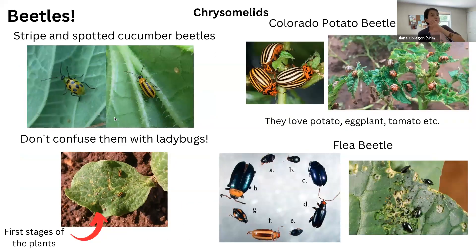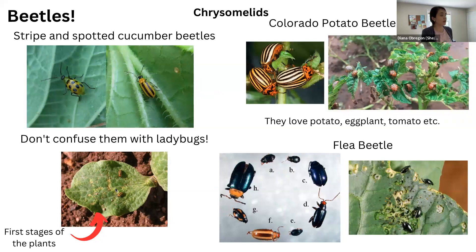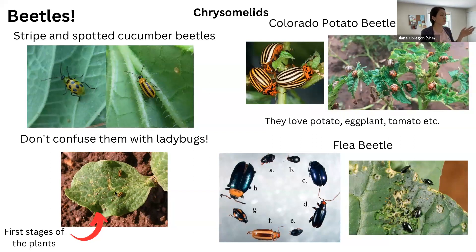There are so many beetles, but some of the common ones are the striped and spotted cucumber beetles. They really like the early stages of plants — at the beginning, when you're growing cucurbits, is when you really need to pay attention because they can be very aggressive. The larvae also feed from the stem or from the roots, so you need to be aware of them.